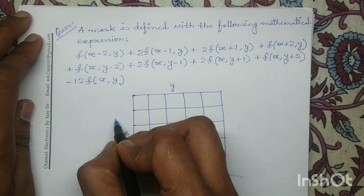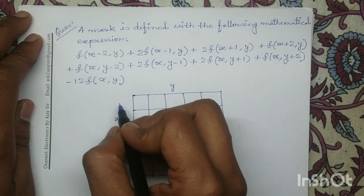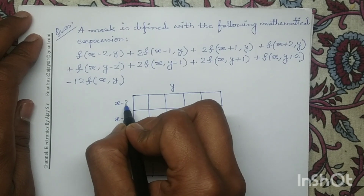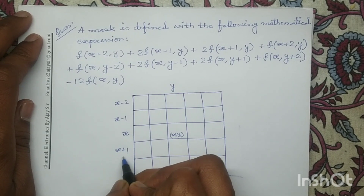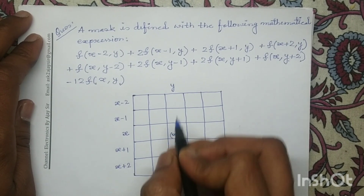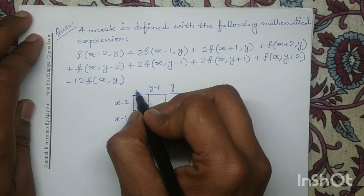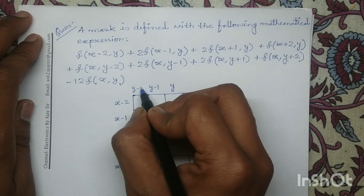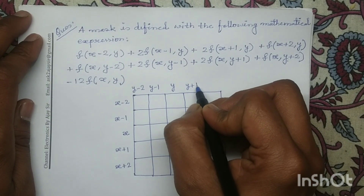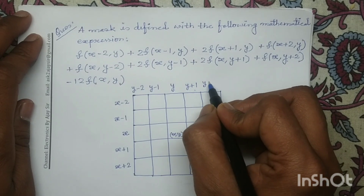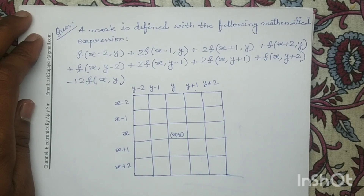One row before x is x minus 1, one row before x minus 1 is x minus 2, one row after x is x plus 1, and one row after x plus 1 is x plus 2. Similarly, one column before y is y minus 1, one column before y minus 1 is y minus 2, one column after y is y plus 1, and one column after y plus 1 is y plus 2. Now we will assign the coefficient in each pixel.